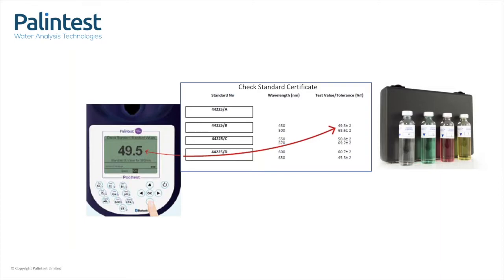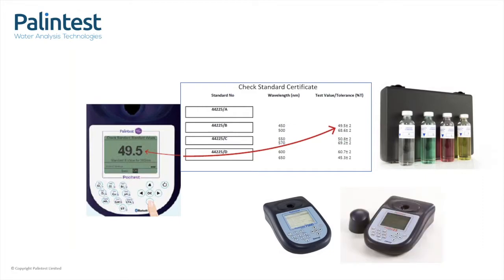The percent T is shown on the certificate. Each coloured vial can be used to check two wavelengths. So a six-wavelength instrument, like the photometer 7500 or pool test 25,